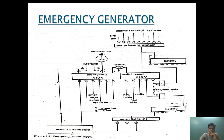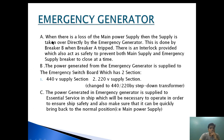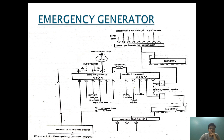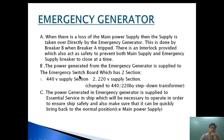The conversion from 440V to 220V is carried out by a transformer. When there is a loss of main power supply, the supply is taken over by the emergency generator. Breaker B comes into action when breaker A trips and connects the emergency generator to the other power sources. In normal operation, this breaker is disconnected and power is provided through the main switchboard.